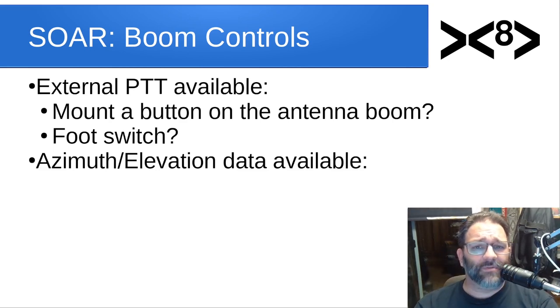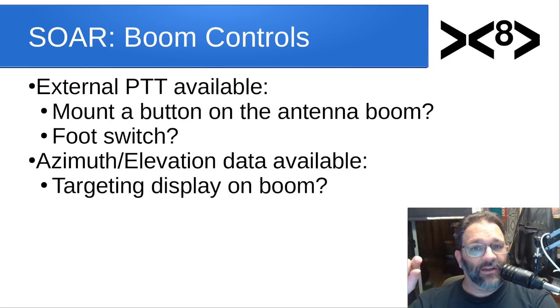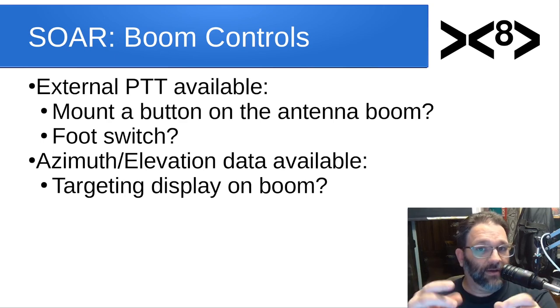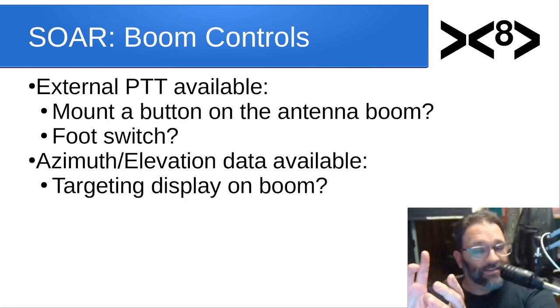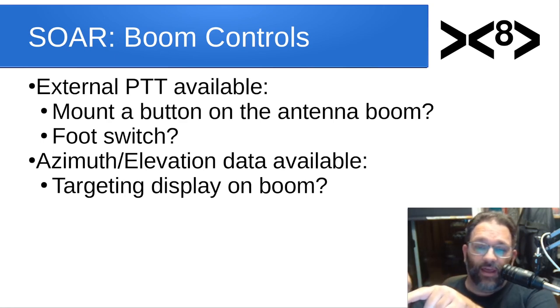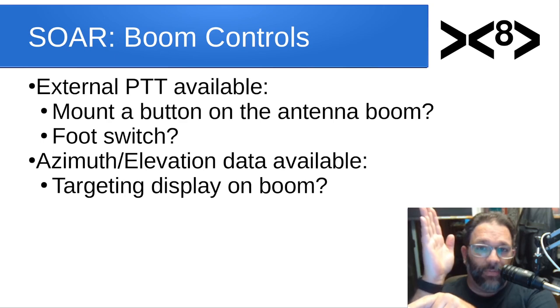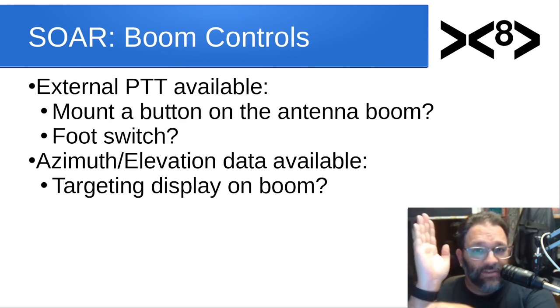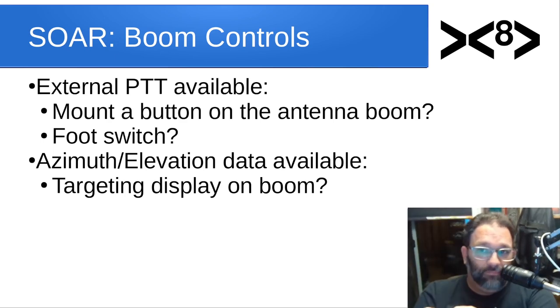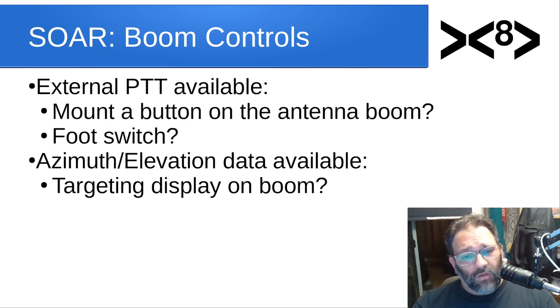We are also going to be exposing the azimuth and elevation information through a serial port on that same connector. And the idea is that you can run that serial data up through that cable to the boom of the antenna and make a little targeting display. Maybe you make a tiny computer with a display that has a magnetometer and an accelerometer in it. If the boom knows where down is and it knows where North is and it knows what azimuth and elevation the satellite is at any given time, you take the difference between those two vectors. And now I can say, you need to move your antenna up a little bit more, a little bit more over to the left. And it can help you point that antenna toward the satellite. That's something I'm thinking about.